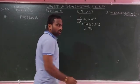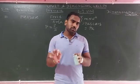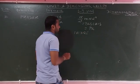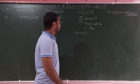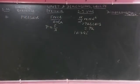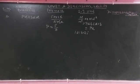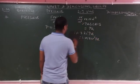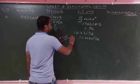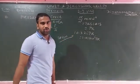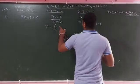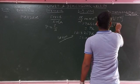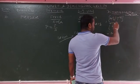Atmospheric pressure is 101325 Pa, which equals approximately 1.01 × 10⁵ Pa, also written as 1 atm (atmosphere). The dimensional formula for pressure: force divided by area = M¹L¹T⁻² divided by L², which gives M¹L⁻¹T⁻².